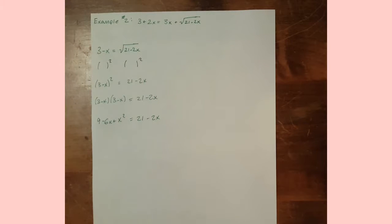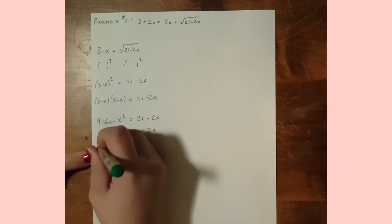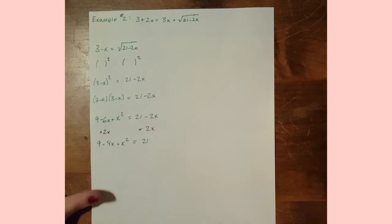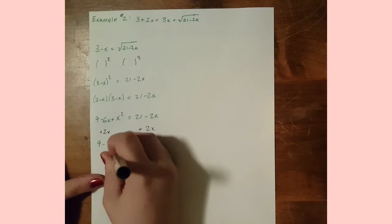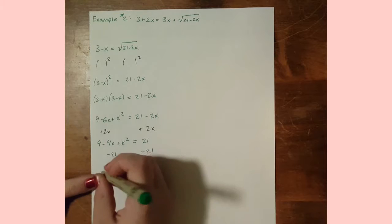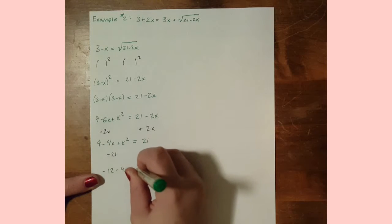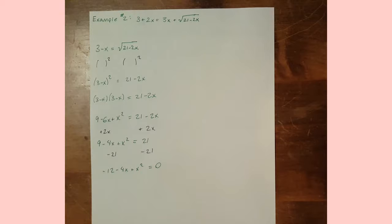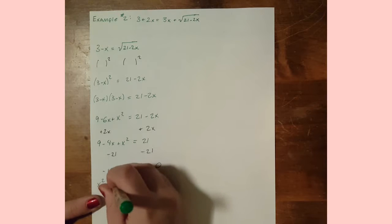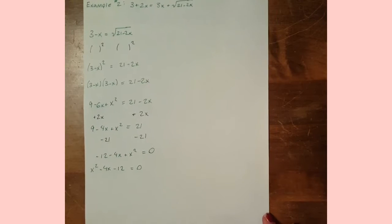With some basic algebra we add 2x to both sides to get 9 minus 4x plus x squared equals 21. Then we subtract 21 from both sides to get negative 12 minus 4x plus x squared equals 0. Rewriting this as x squared minus 4x minus 12 equals 0 makes the quadratic easier to work with.